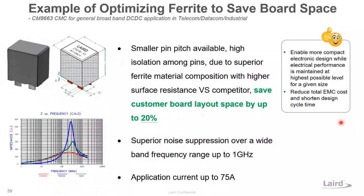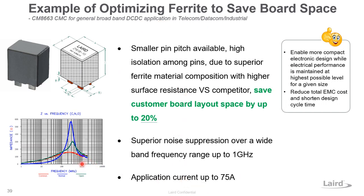This is the second power stage conversion — DC-to-DC. Laird offers a very high-power application up to 75 A. Through material innovation, this common mode choke is designed with a very small pin pitch, reducing the pin pitch to save customer board layout space by up to 20%, while maintaining the required isolation and insulation among the pins. This is very popular for telecom, data center, and industrial DC-DC power conversion for high-frequency broadband common mode noise filtering up to about 1 GHz and up to very high current.